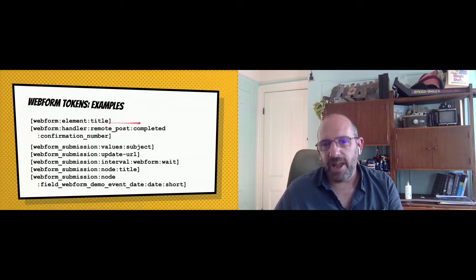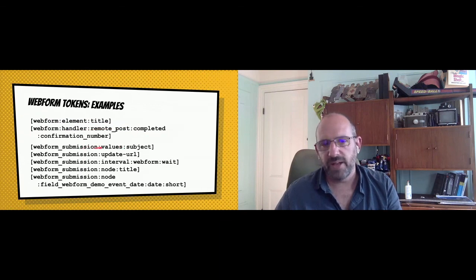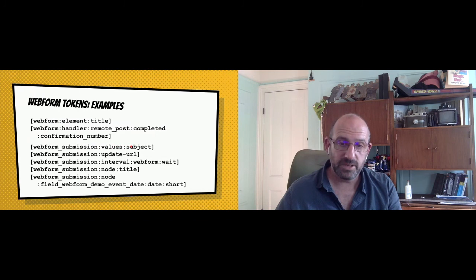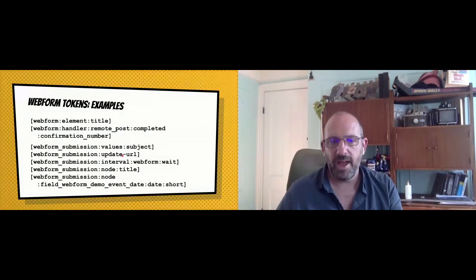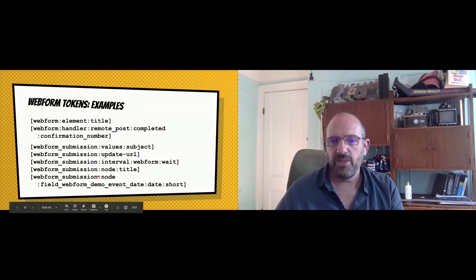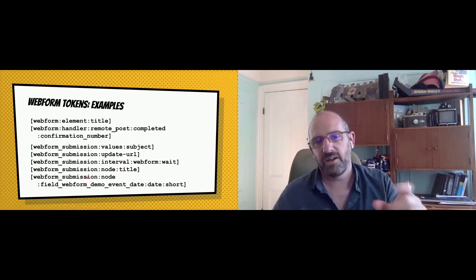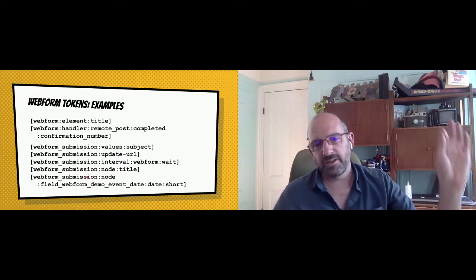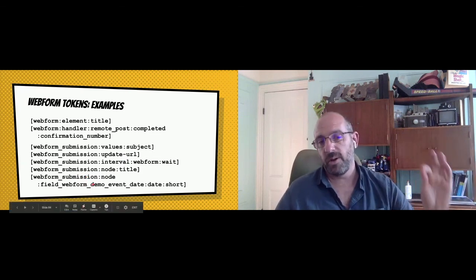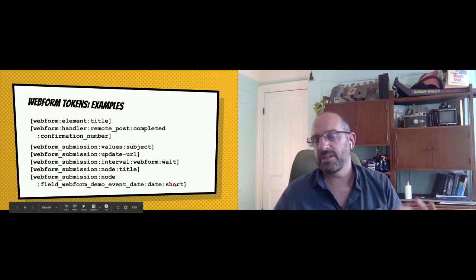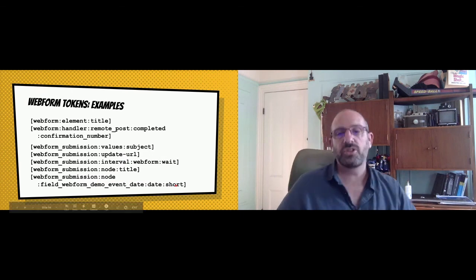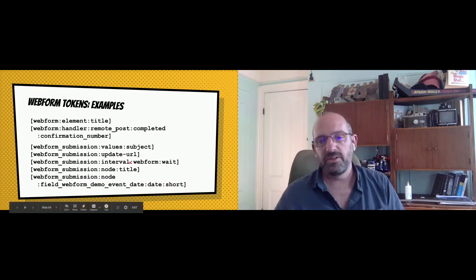You can grab an element title, or the remote post completed number. You can grab the value of the subject of an email or add a custom URL. These are all documented when you have the Webform Token module turned on. The event registration demo uses this token — it goes out to the event node and grabs the field 'webform_demo_event_date,' grabbing the date format in 'short' and inserting it into an element.